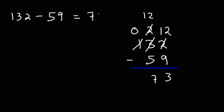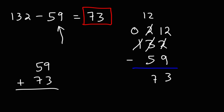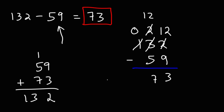The answer is 73. If you want to confirm it, you could simply add these two numbers to see if it gives you the first number. If we add 59 and 73: 9 plus 3 is 12, carry over the 1. 1 plus 5 is 6, 6 plus 7 is 13. It does give us our original number, which tells us that 73 is indeed the correct answer.